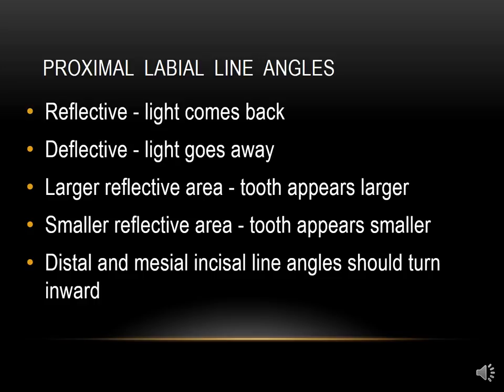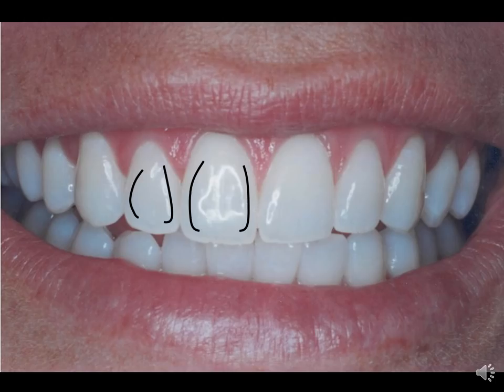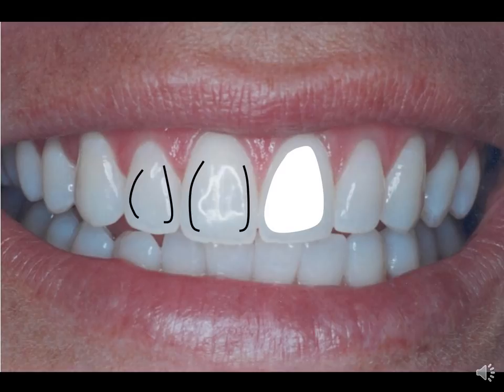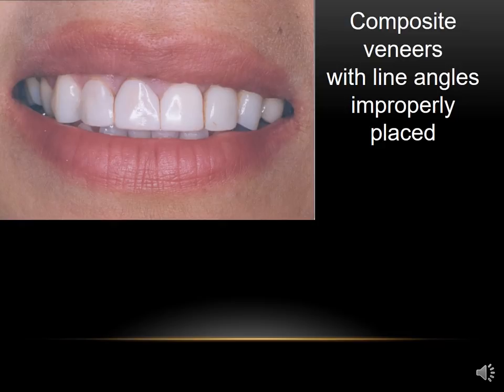Distal and mesial incisal line angles should turn inward. Here's an example of composite veneers that were done where the operator did not pay close attention to how the line angles were placed. You can see that the result is not very aesthetic.